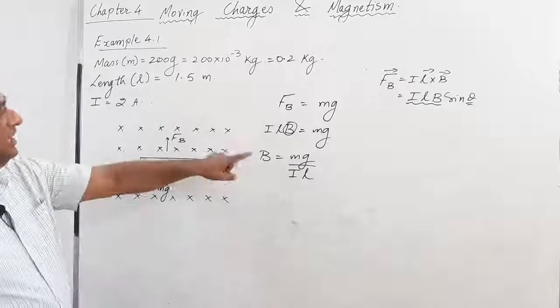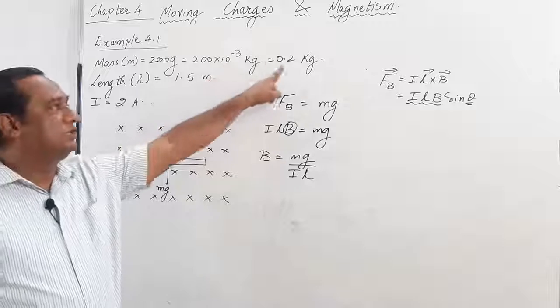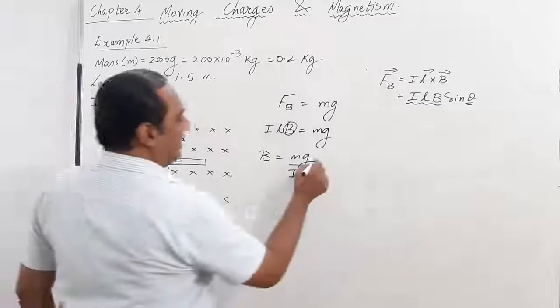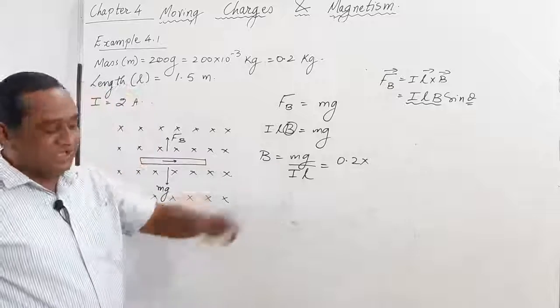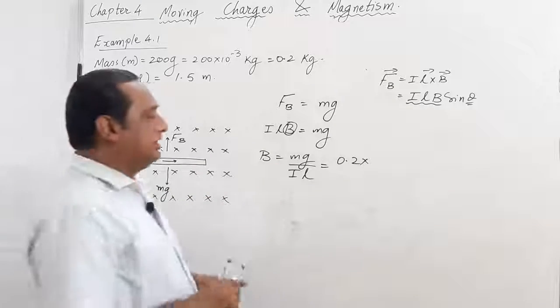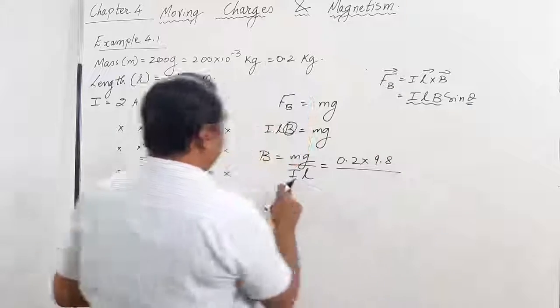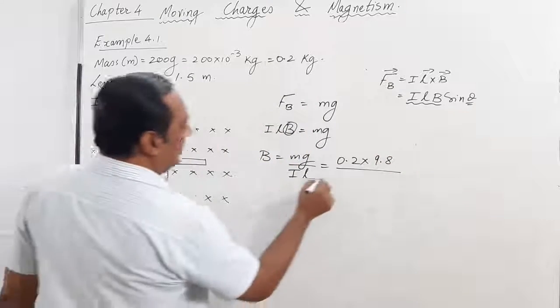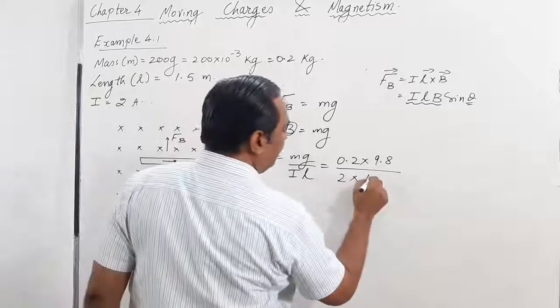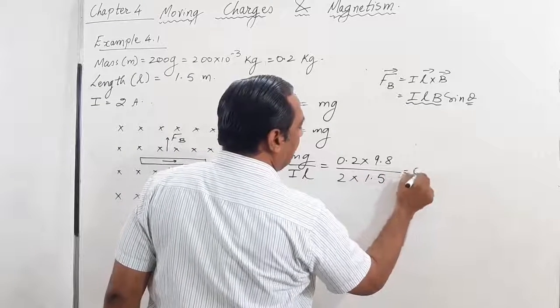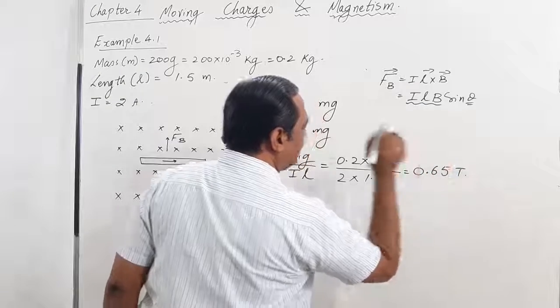Now, in the question, what information is given? The mass is given as 200 grams, which is 0.2 kg. G is the acceleration due to gravity and its value is 9.8. I is the current, which is 2 amperes. And length of the rod is given as 1.5 meters. If you calculate it and solve it, you will get 0.65 Tesla.